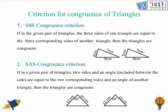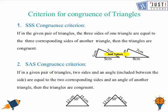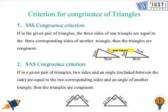The SSS criteria states that if in a given pair of triangles, three sides of one triangle are exactly equal to the corresponding three sides of another triangle, then the triangles are congruent by the SSS criterion. As we can see in these two triangles, one side is 5 centimeters and so is the corresponding side, another side is 7 centimeters and so is the other, and the last side is 9 centimeters and the same here.